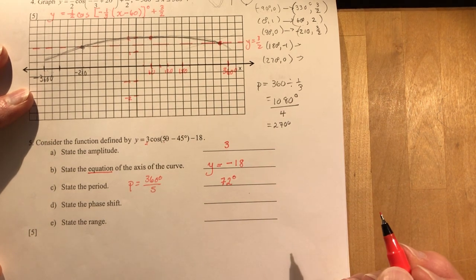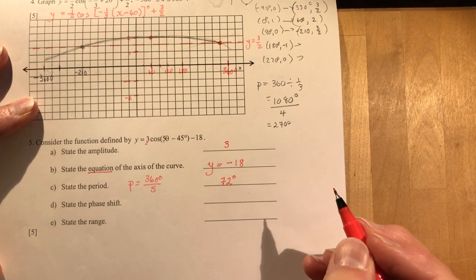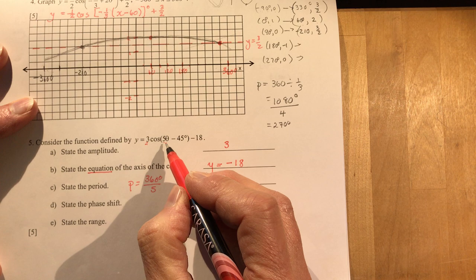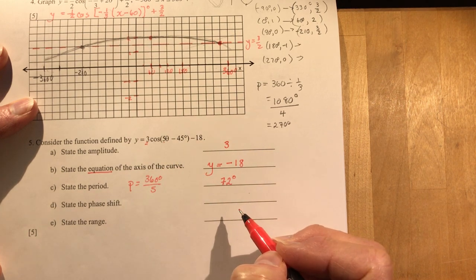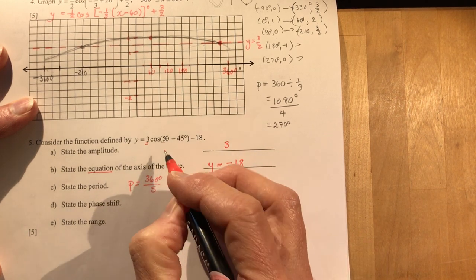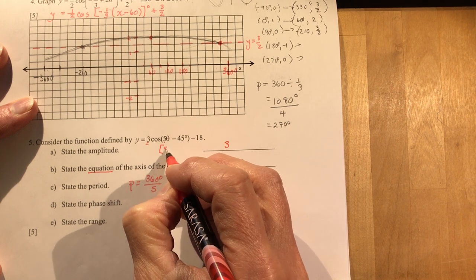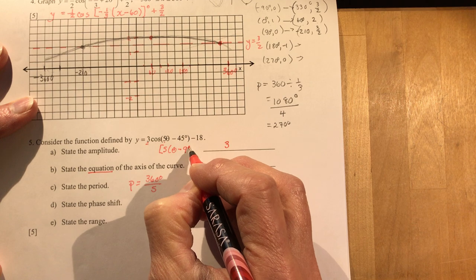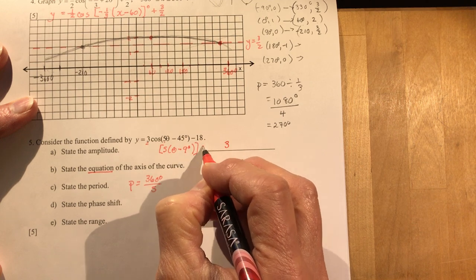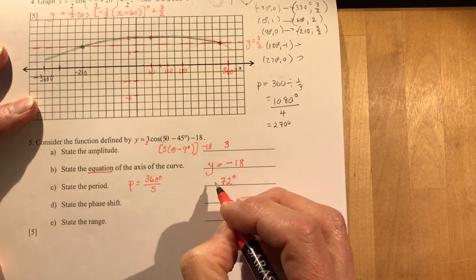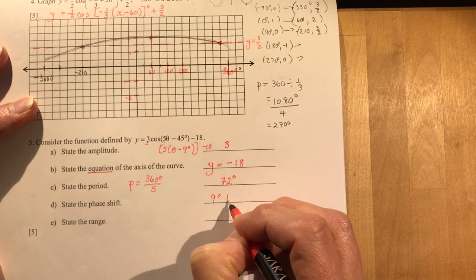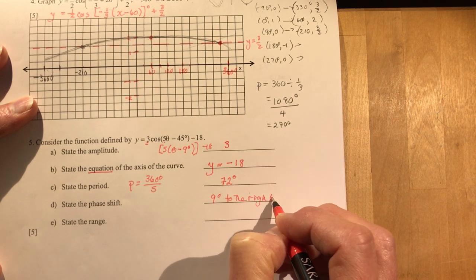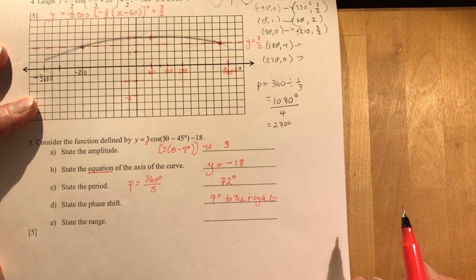What is the phase shift? Don't be fooled by these questions when it hasn't been factored out. It's the same thing as all those other transformations we've covered. You must factor the five out. So this is really five theta minus nine degrees minus 18. So you would say nine degrees to the right.